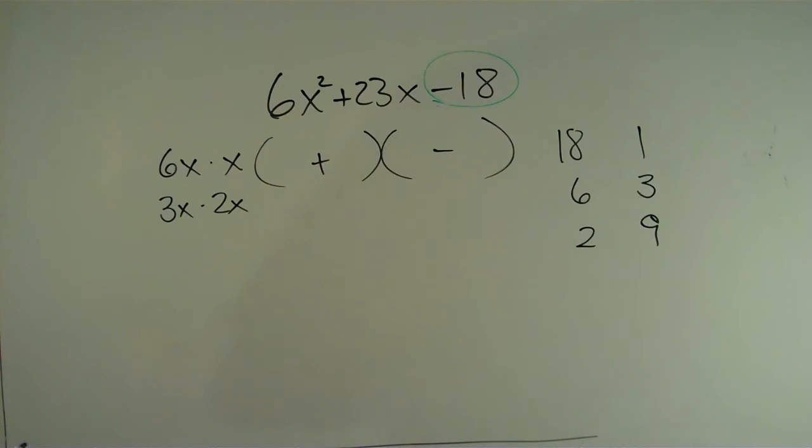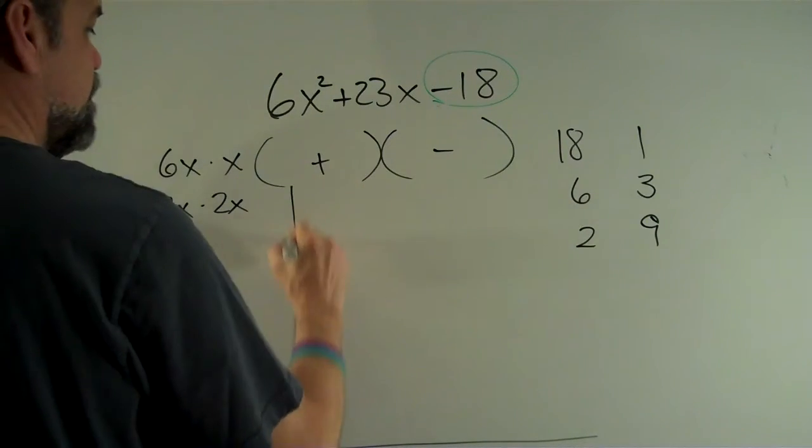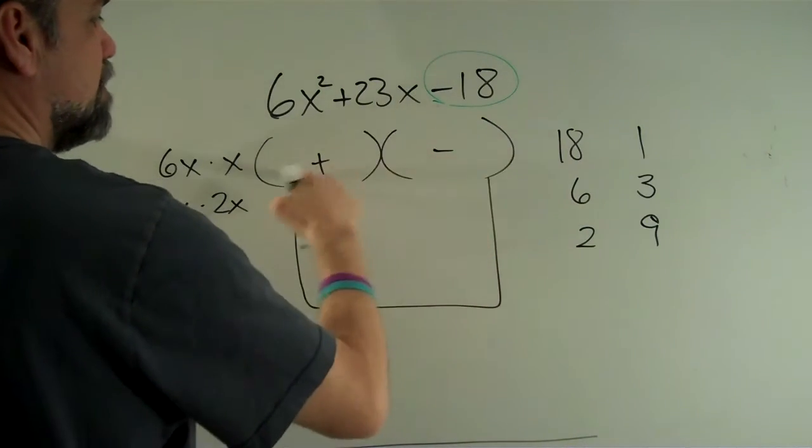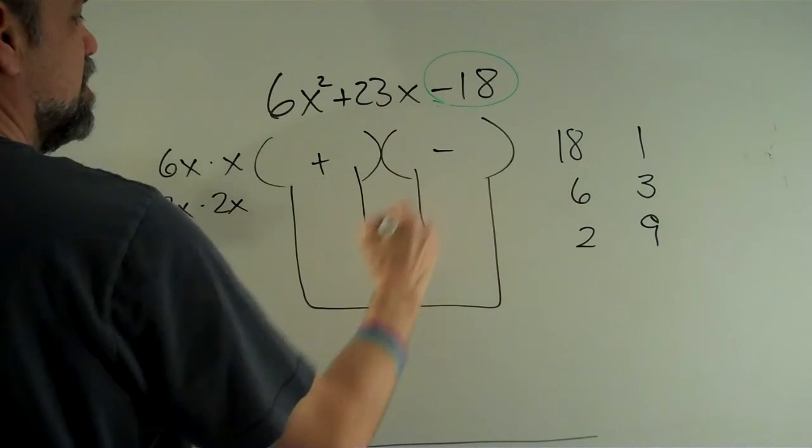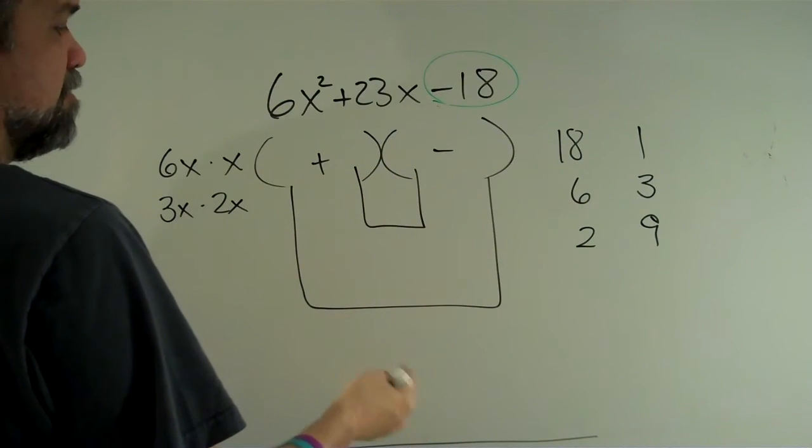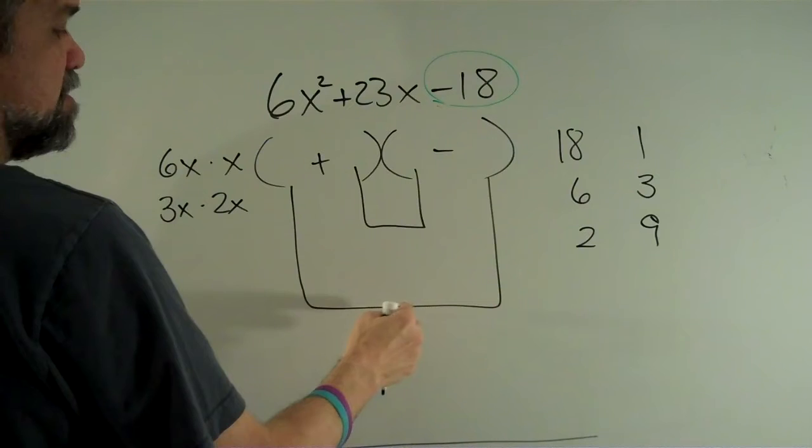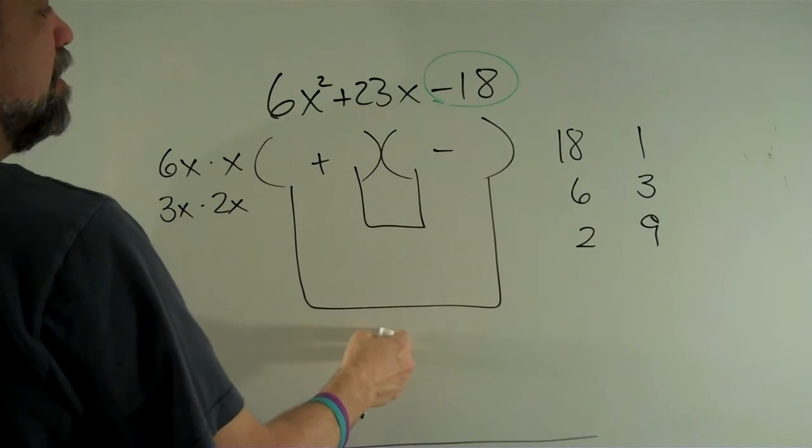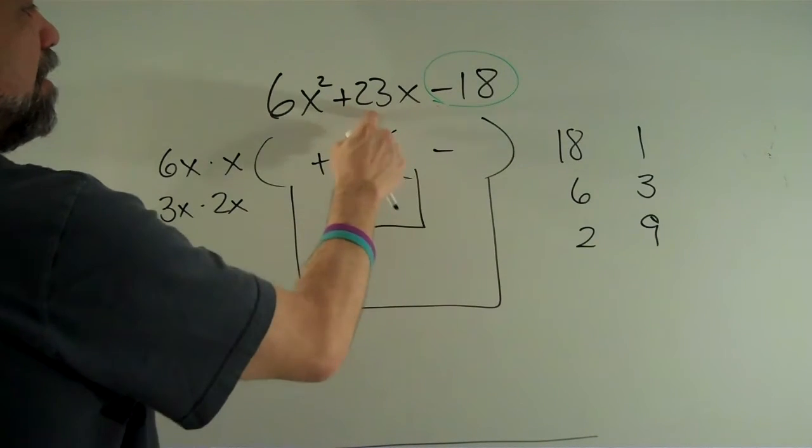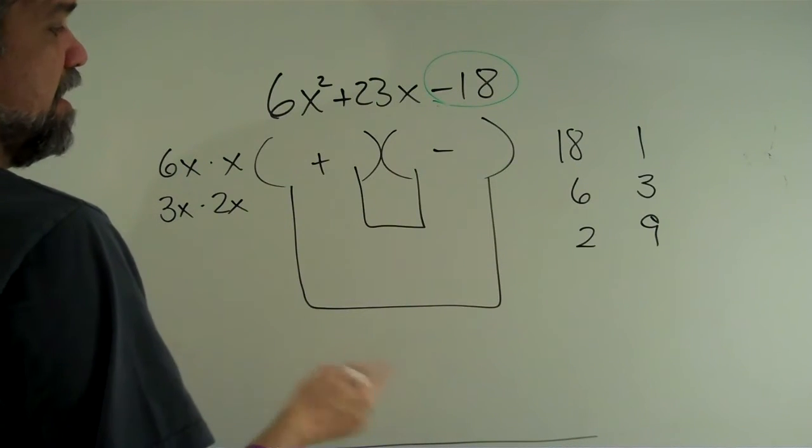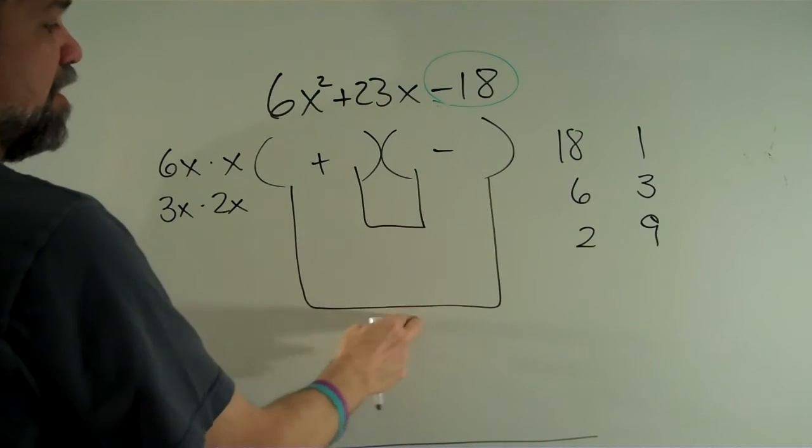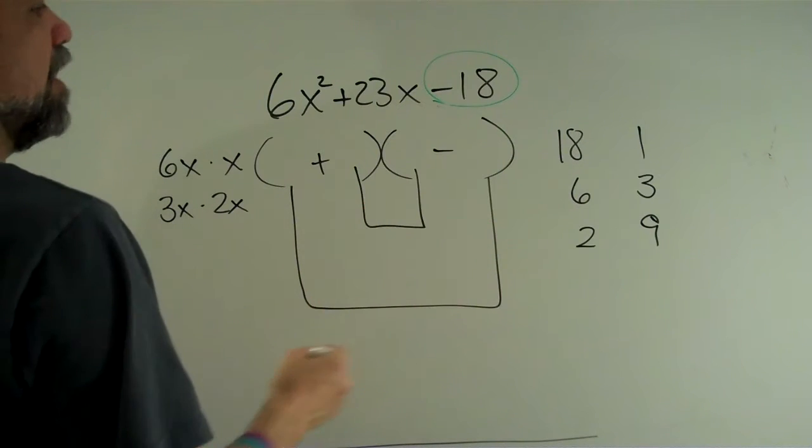I'm going to multiply the outside terms together, and then I'm going to multiply the inside terms together. Like I said before, one product will be positive, one product will be negative. And so when I combine those two, I'll get 23x, positive 23x. And since one product is positive and one product is negative, that means I'm going to be subtracting.